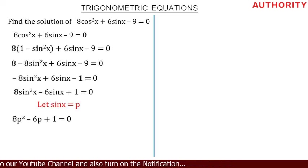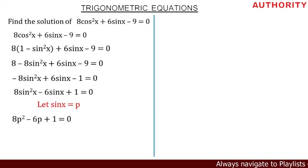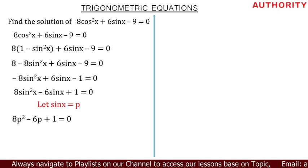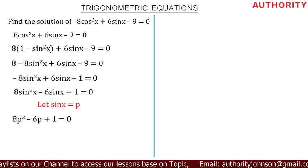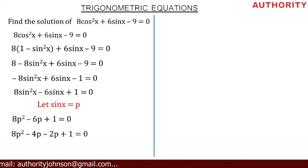To factorize, the coefficient of p² multiplied by the constant is 8 × 1 = 8. We need two numbers that add to −6 and multiply to +8. Those numbers are −4 and −2, since −4 + (−2) = −6 and (−4)(−2) = +8. We replace −6p with −4p − 2p, giving 8p² − 4p − 2p + 1 = 0.